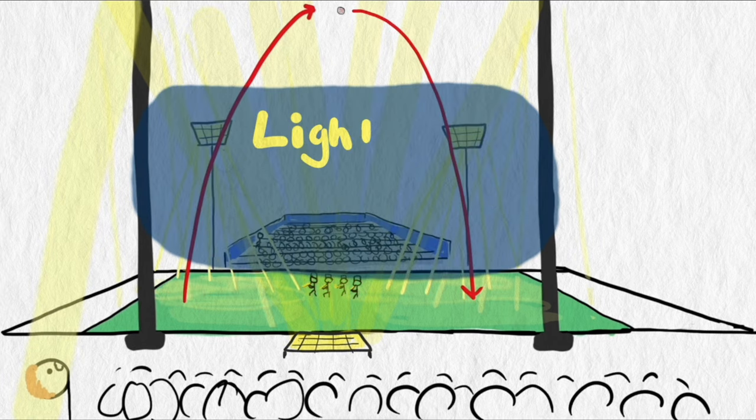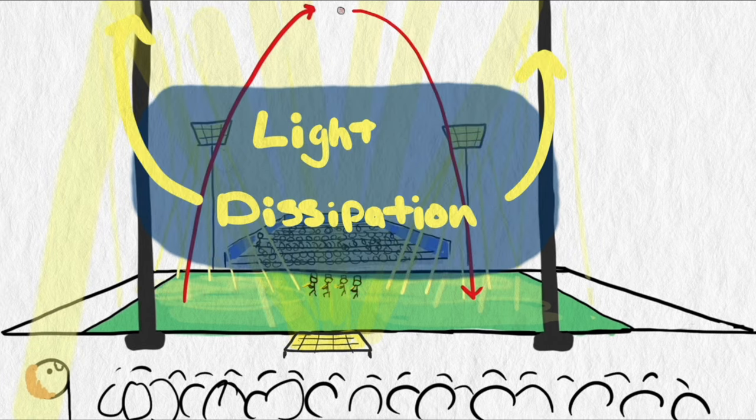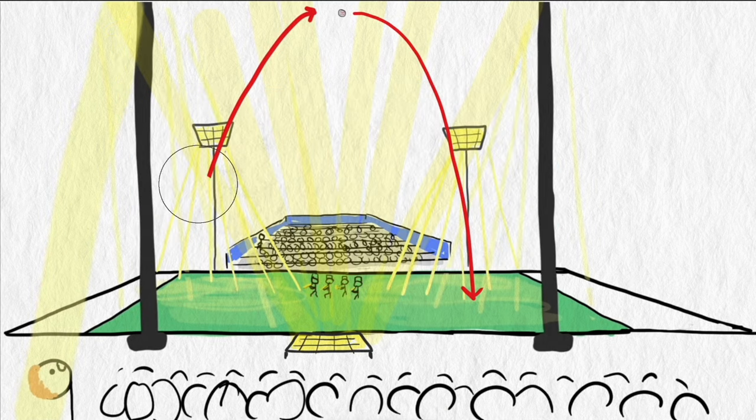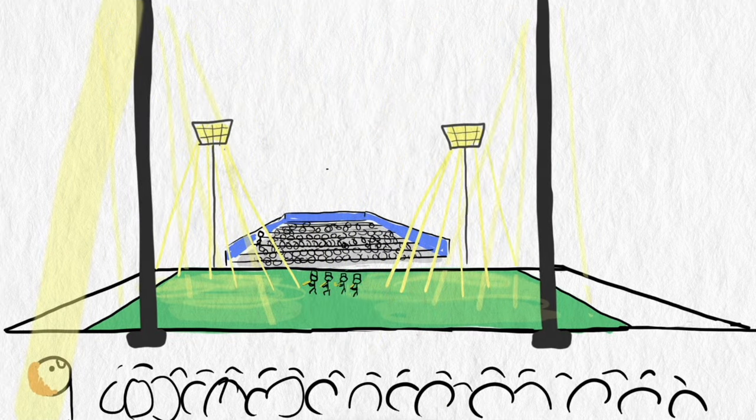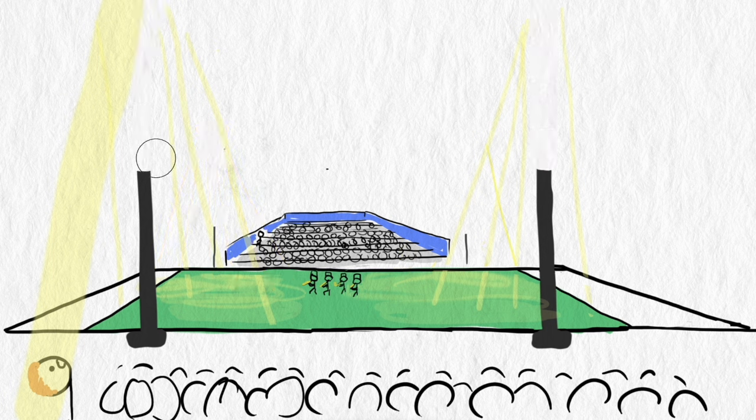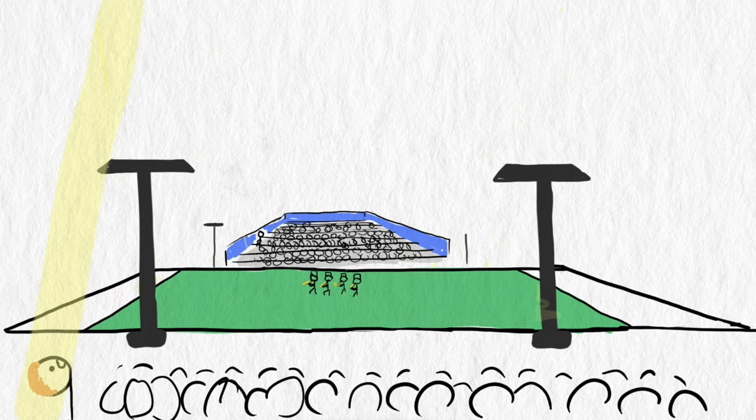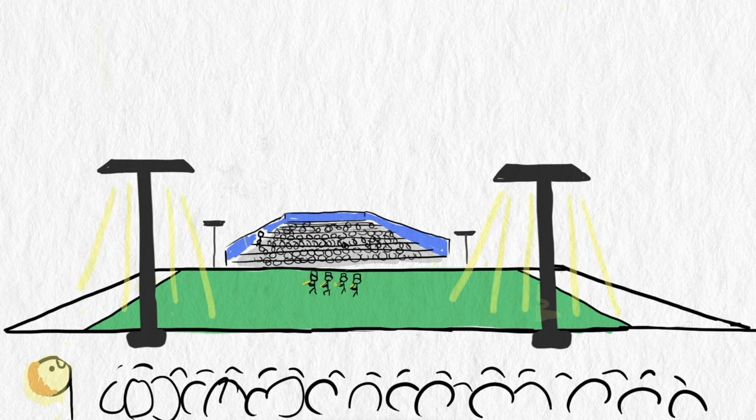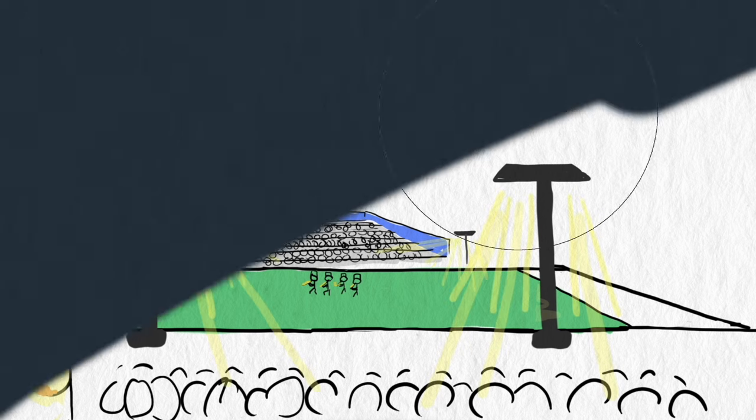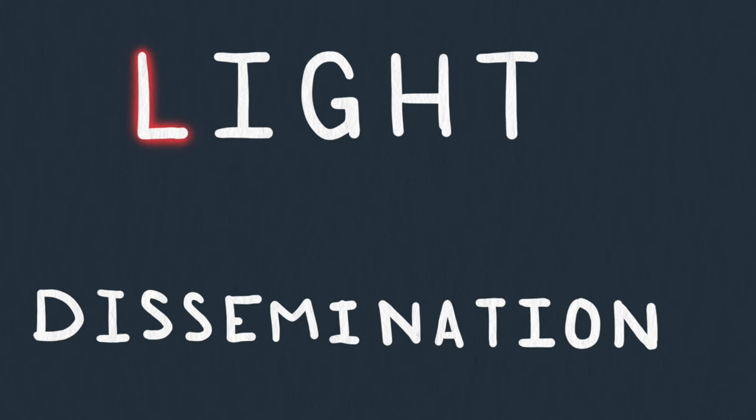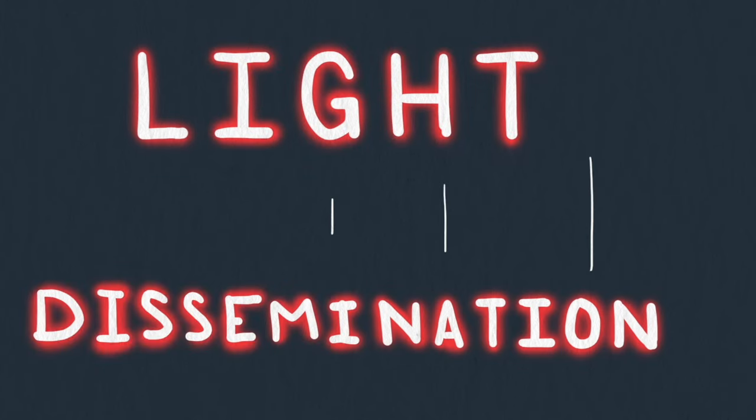The answer about why the lights are so high actually comes down to the mathematics of light dissipation. To answer the question, one might start by imagining what would happen if the lights were lower. We can calculate how brightly the lights shine on different people using some simple mathematics of light dissipation.